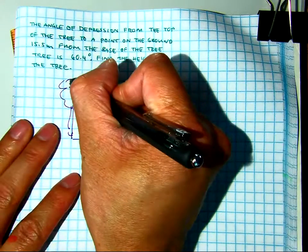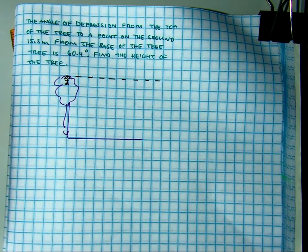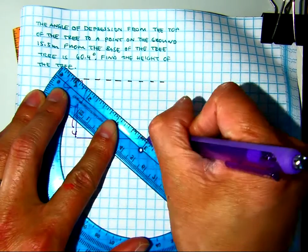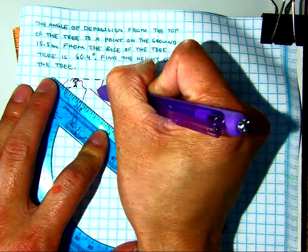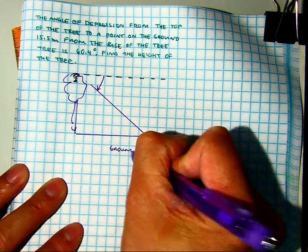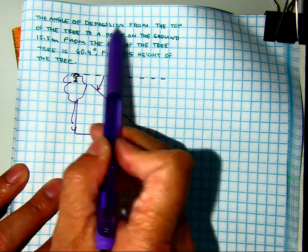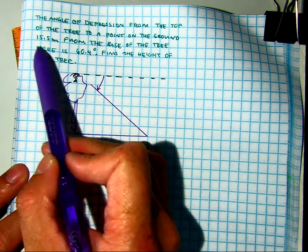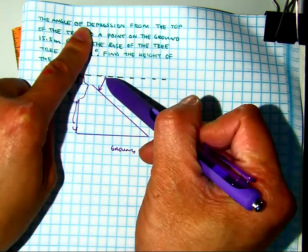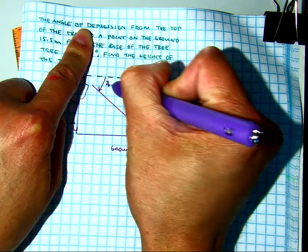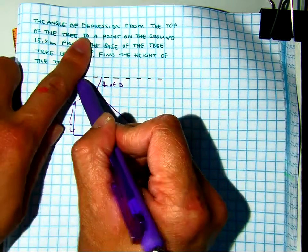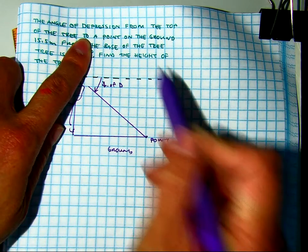So the angle of depression, I know, this is the angle of depression from the line of sight and then looking down at the ground. So I'm going to call this the ground. Is there an object as it says? The angle of depression from the top of the tree to a point on the ground is 15.5 feet from the base of the point. So the angle of depression is right there. From the top of the tree to a point on the ground. This is my point on the ground.